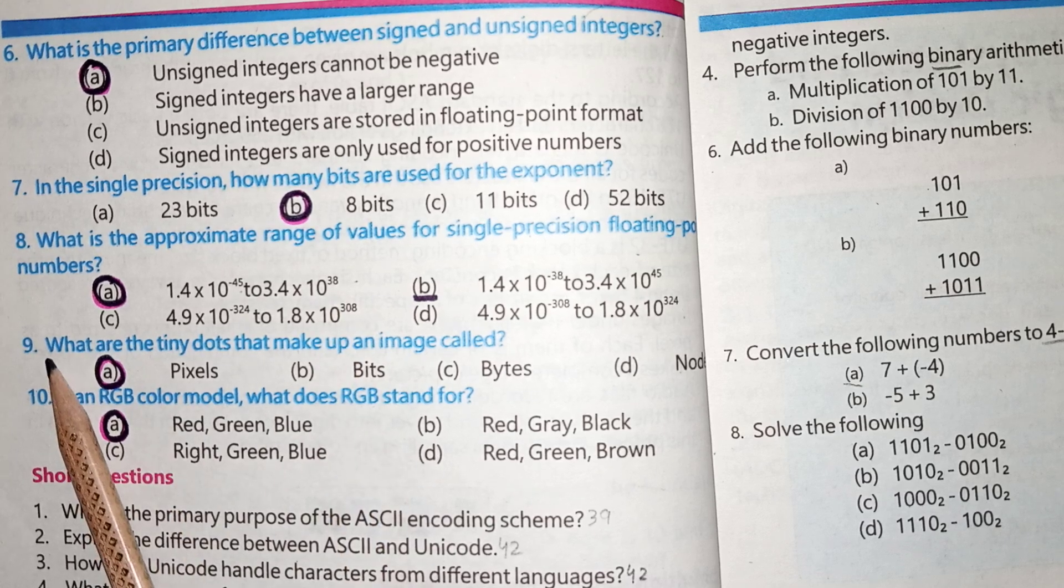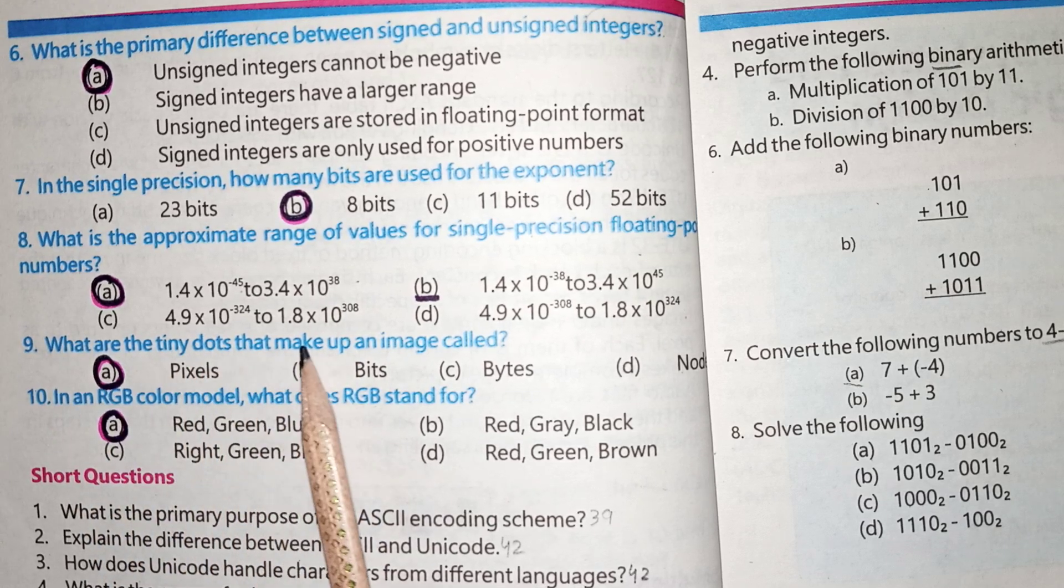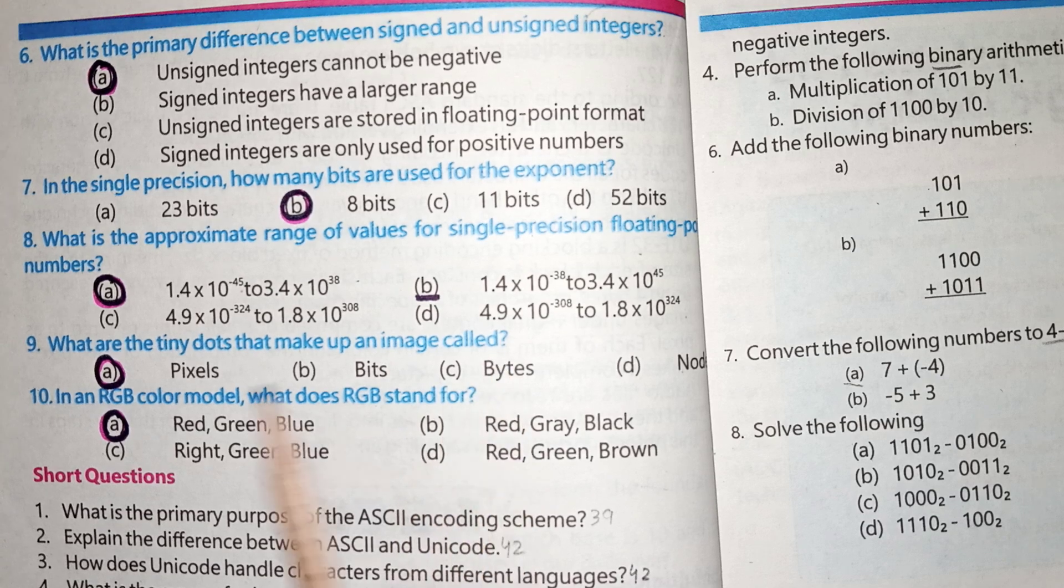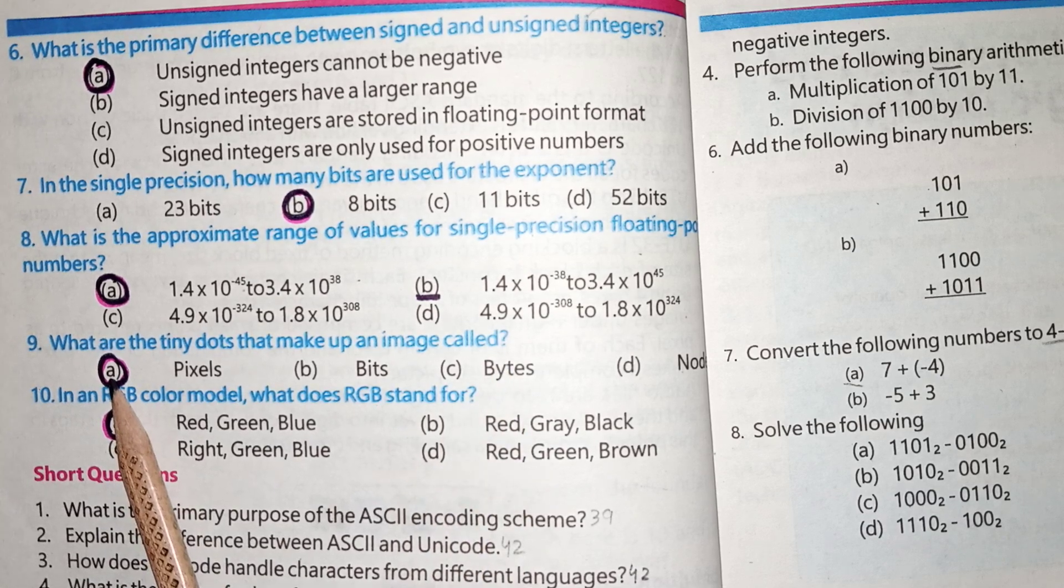Next, MCQs No. 9 is, What are the tiny dots that make up an image called? That is, Pixel. A is the correct option.